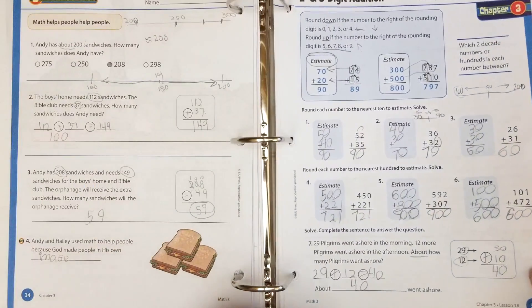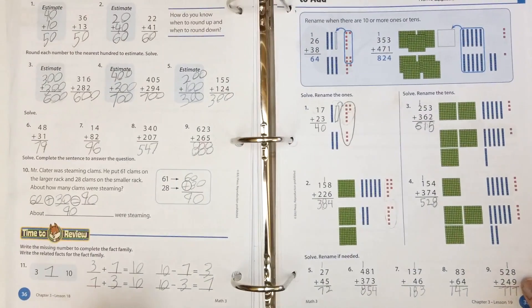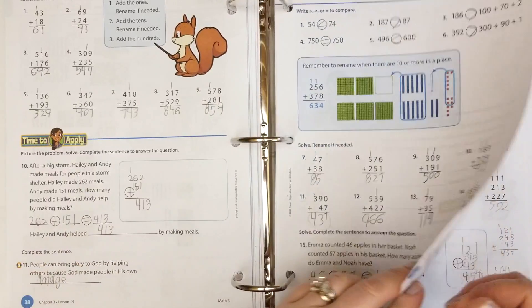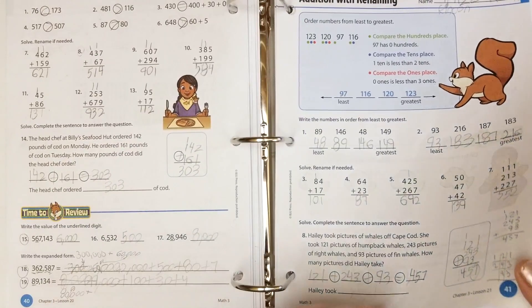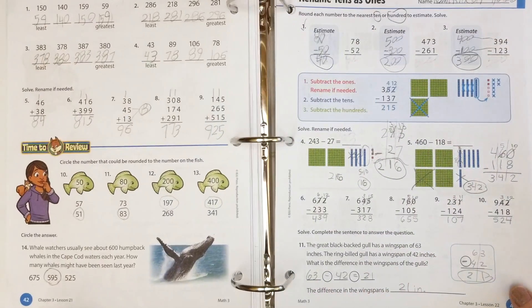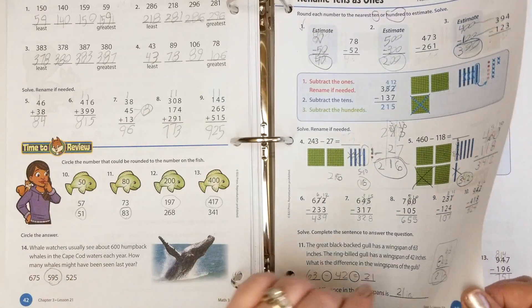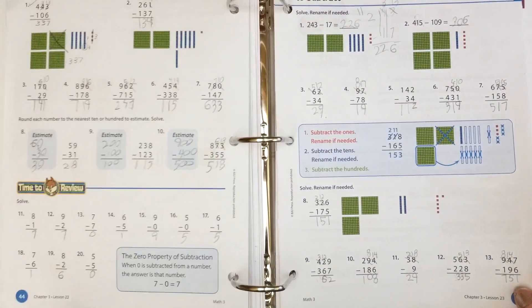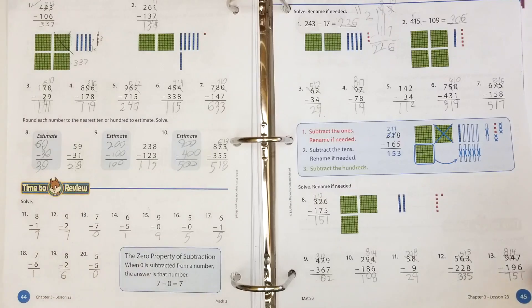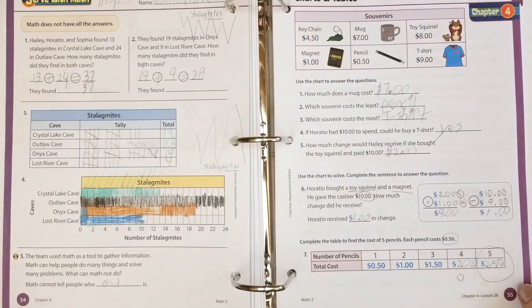Two to three digit addition, rename ones or tens, compare numbers, order numbers. They call it renaming, but I usually call it carrying over when I was a kid, so I just teach my daughter how I was taught, just saying carrying over.